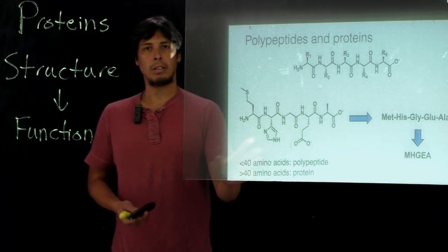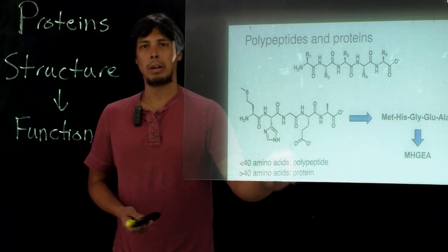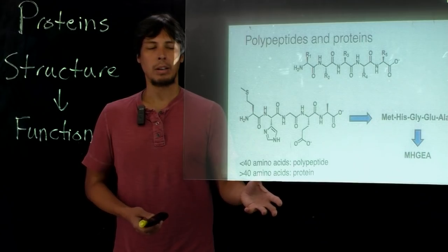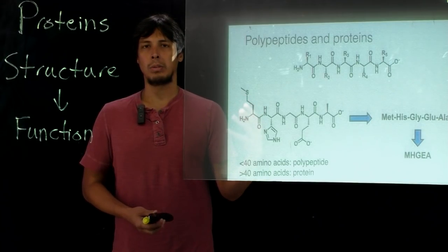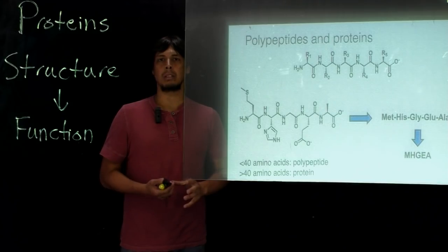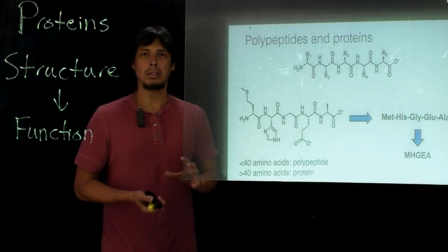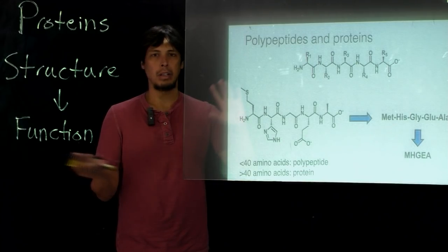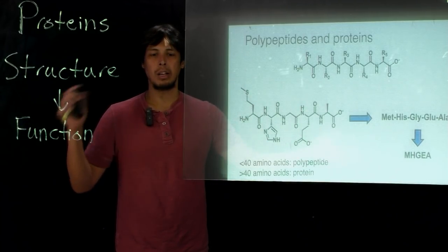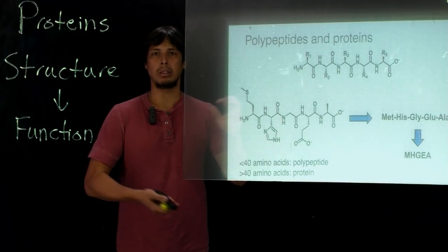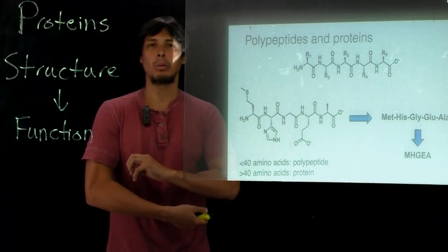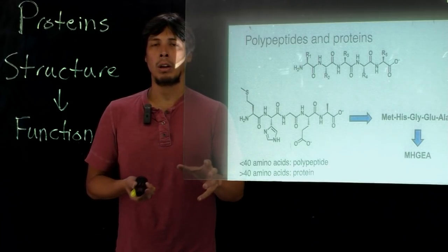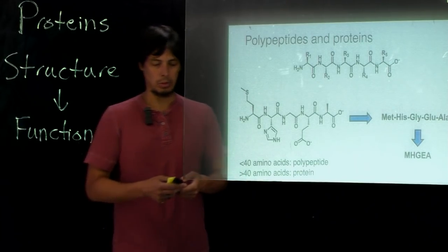When we have a chain of less than 40 amino acids, we call this a polypeptide. Whereas when we have a chain of greater than 40 amino acids, we distinguish that as a protein. The reason for this is that around 40 amino acids is when we start to see, instead of there being very loosely held chains of amino acids, you get to see better defined three-dimensional structures. And remember, this three-dimensional structure is really important for the function of a lot of these proteins.